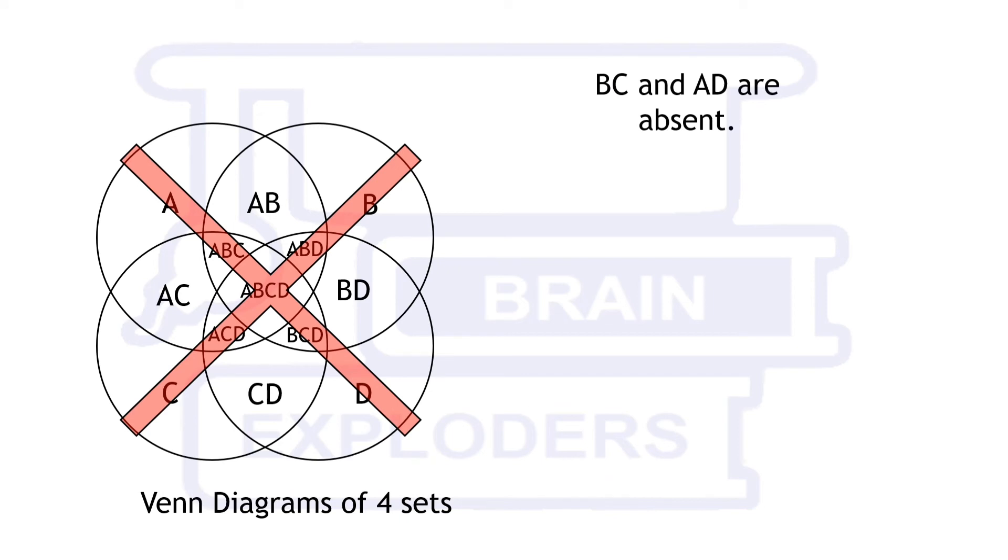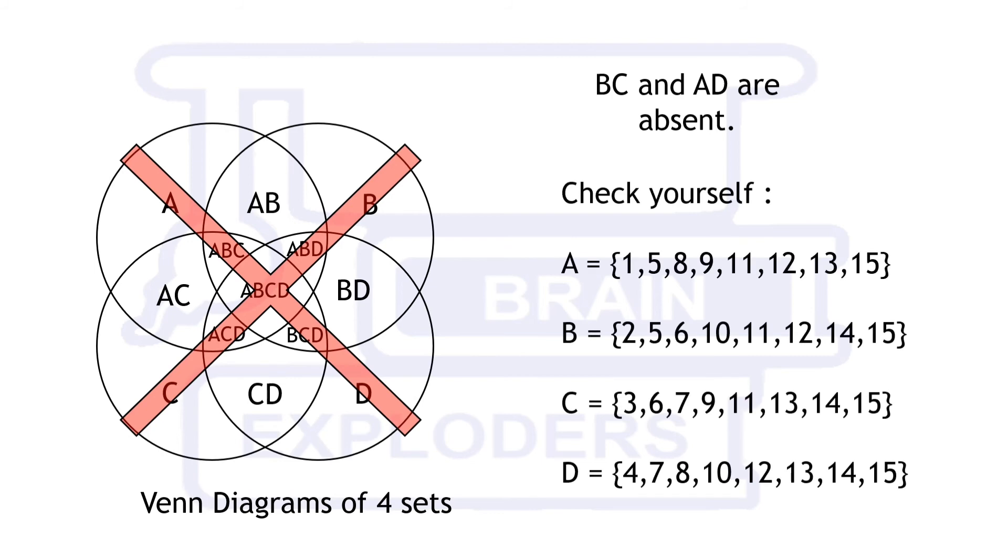Something is missing here. These are B intersection C and A intersection D. If you are not getting this point, then try to fill these entries in the respective regions.